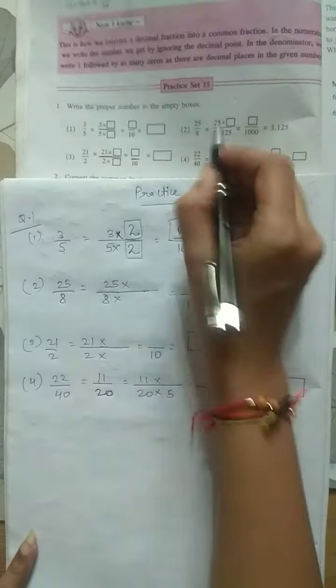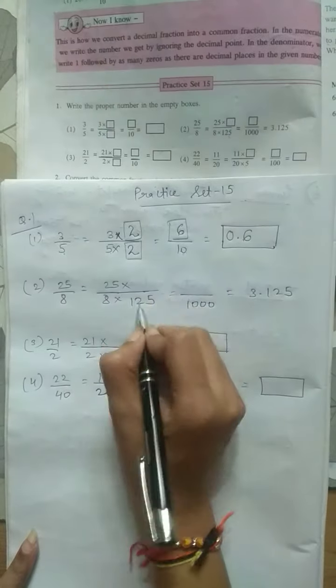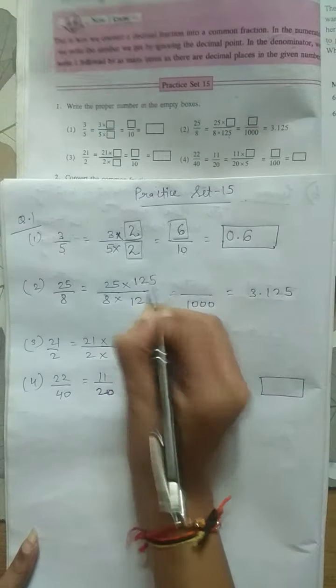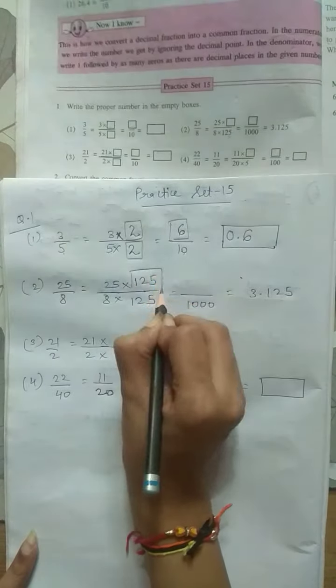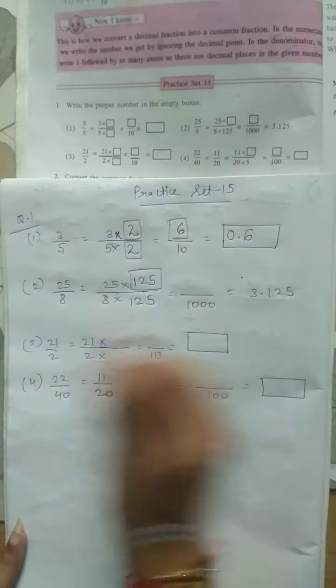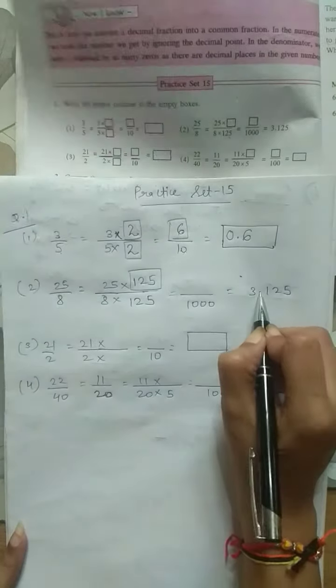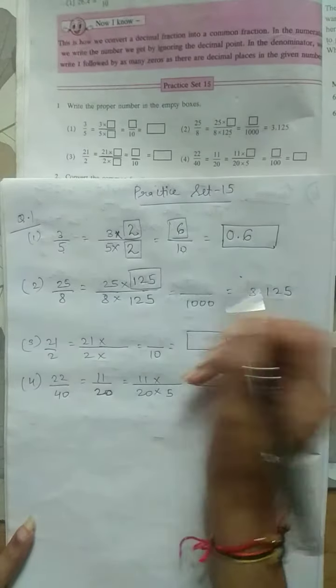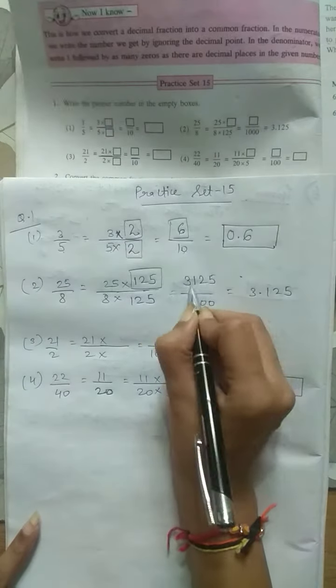Now in question number 2, this 125 is already given. So it is understood that we have to multiply 125 in the numerator as well. So 8 into 125 is 1000. And the final answer is also given: 3.125. Hence it is understood that in the numerator it is 3125.